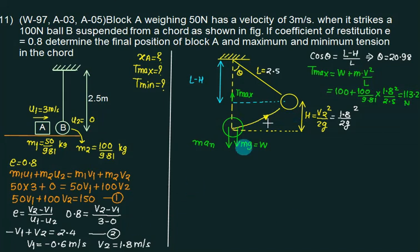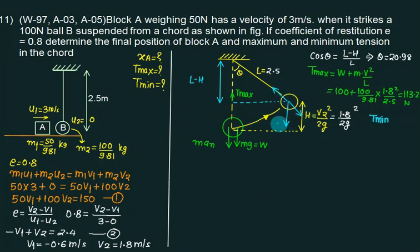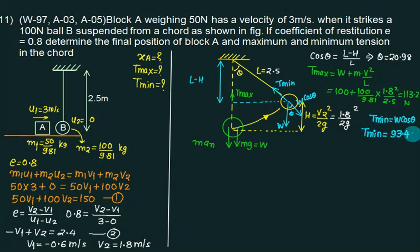For minimum tension, at the maximum swing angle the normal acceleration an is zero. The component of weight along the chord balances the tension. So T_min equals W times cos(theta). With W = 100 N and theta = 20.99 degrees, the value of T_min is 93.4 N.